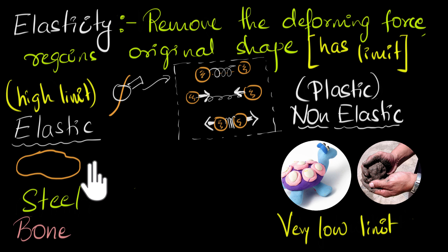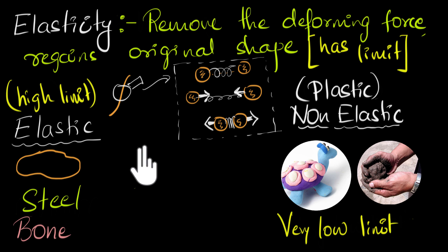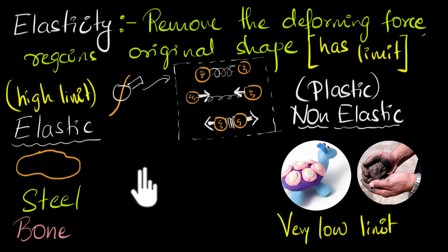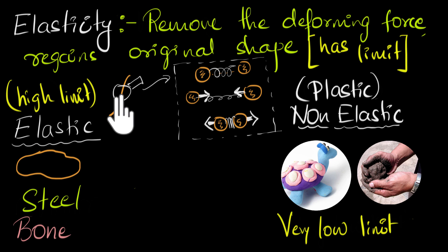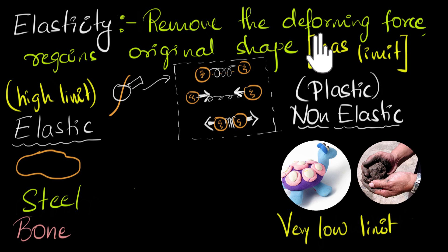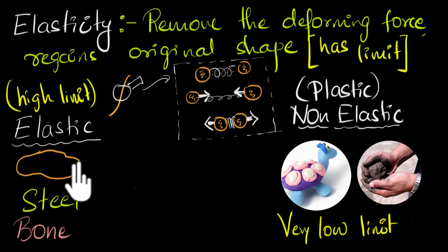Let's now tackle the most classic question when it comes to elasticity: which one is more elastic — rubber or steel? The most common answer is rubber. If I ask why, one may say that's because rubber stretches a lot and still snaps back, but steel can't be stretched as much as rubber — it would just break. But remember, when we think about elasticity, we don't care how much the material deforms. That's irrelevant. What we only care about is how much deforming force it can withstand and still snap back to its original shape.